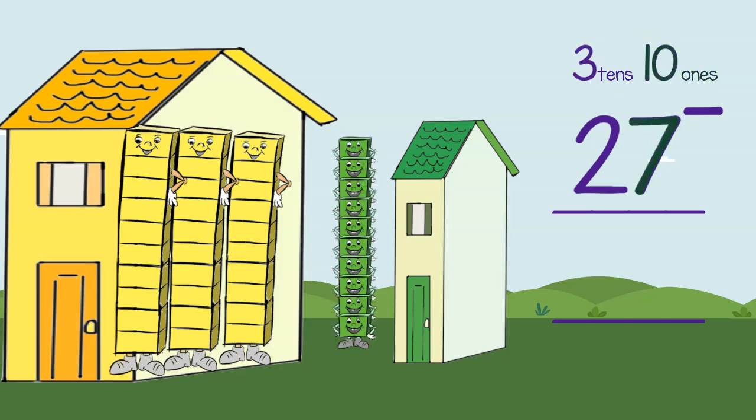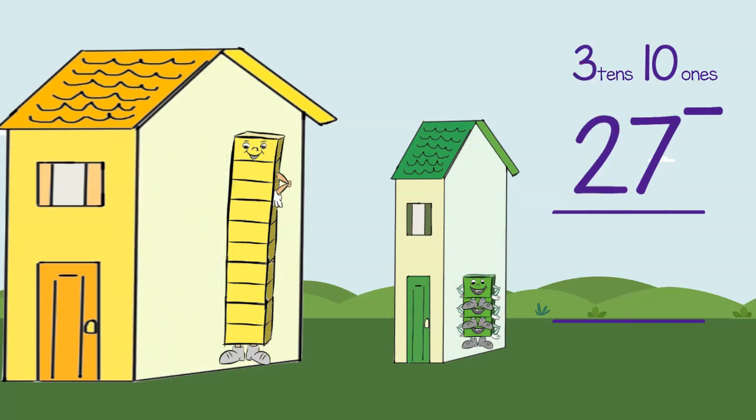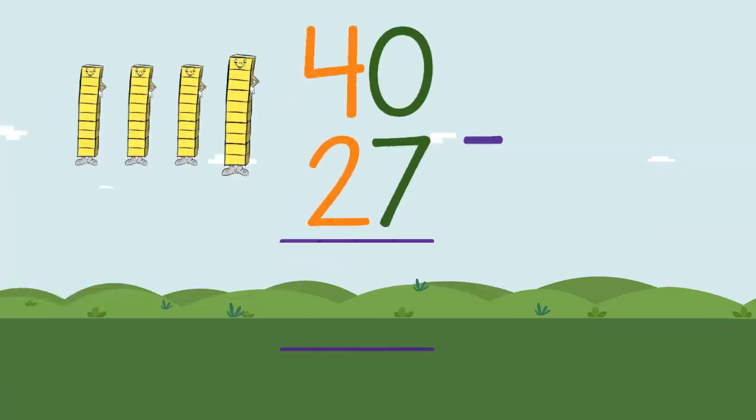Now you can cross out seven ones and you are left with three ones. Take out two groups of tens and you are left with one group of tens. The number that amazingly appears is 13. This is what we did.